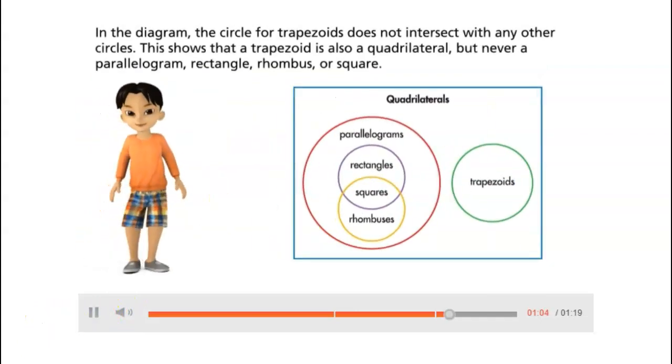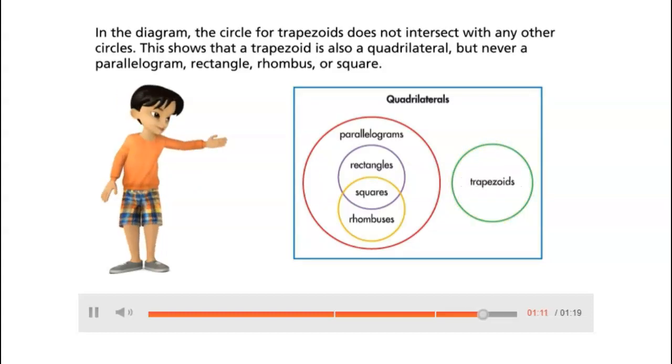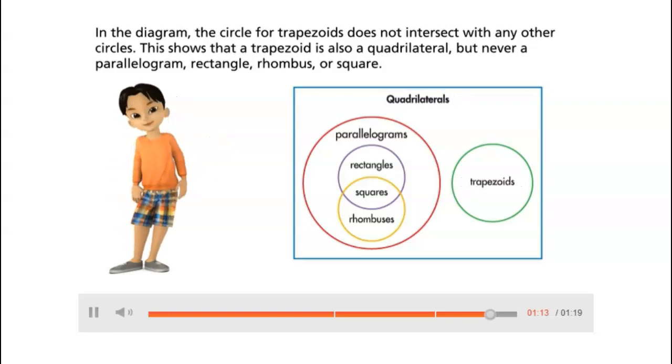In the diagram, the circle for trapezoids does not intersect with any other circles. This shows that a trapezoid is also a quadrilateral, but never a parallelogram, rectangle, rhombus, or square.